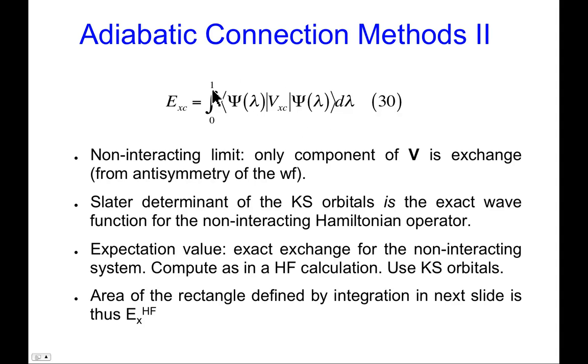Given that means for computing the exchange correlation energy, let's think about what that really means. If we sit at point zero on the integral, the non-interacting limit, then the only component of this exchange correlation potential is the exchange component because we have an anti-symmetric wave function. The Slater determinant of the Kohn-Sham orbitals is the exact wave function for the non-interacting Hamiltonian, and so we could compute the expectation value of the exact exchange just the way we do it in Hartree-Fock theory, except using these Kohn-Sham orbitals.